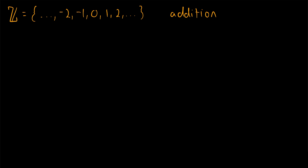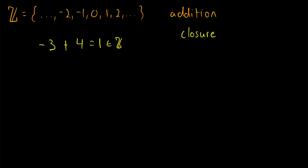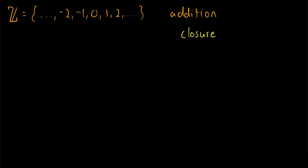The first thing I want you to notice is if we take any two integers, like say negative three and four, and add them together, we get another integer — so one, in this case, is an element of the integers. And this will be true no matter which two integers we add together. This is called the property of closure. The integers are closed under the operation of addition, because any two elements of the integers that we take and add together stay within the set of integers. Satisfying closure is the first group axiom.